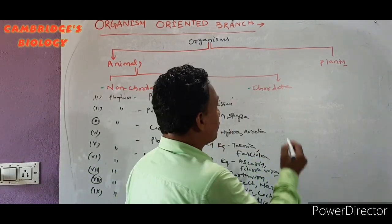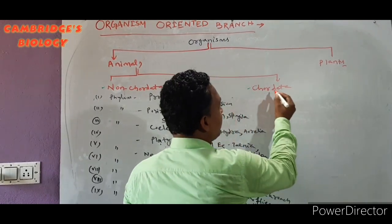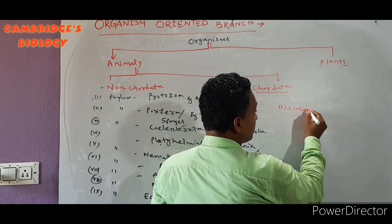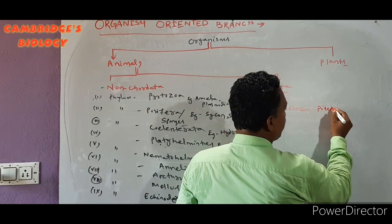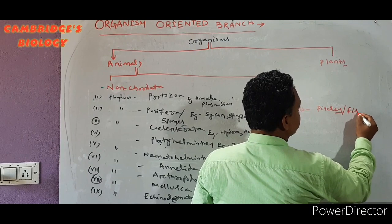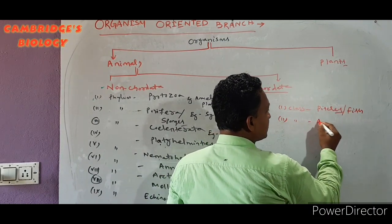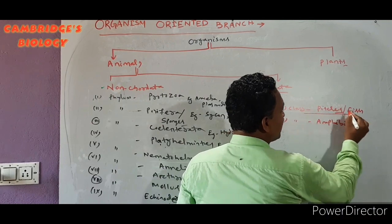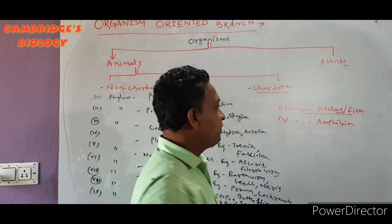Now we will talk about the different classes found in Chordata. The first class is Class Pisces, or Fish. The second one is Class Amphibia.